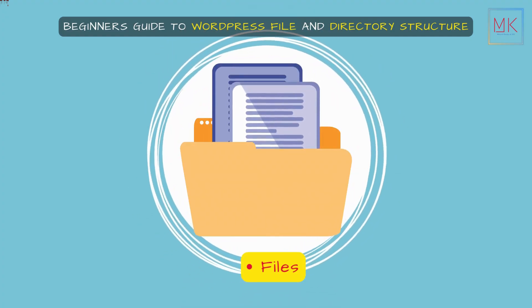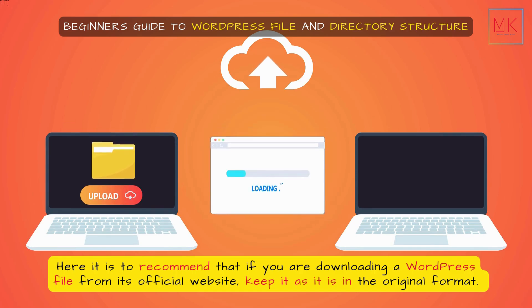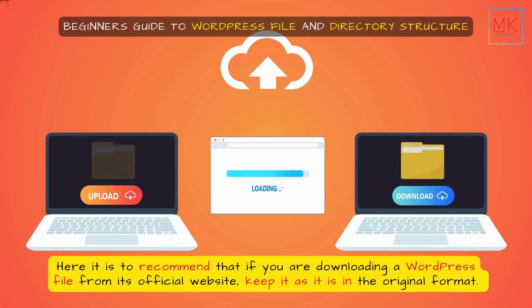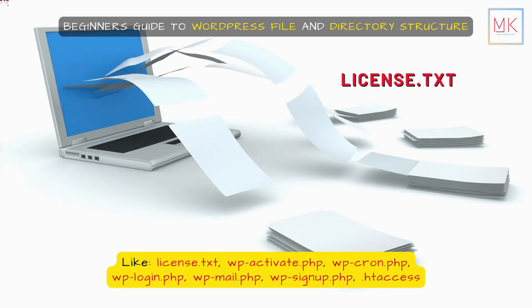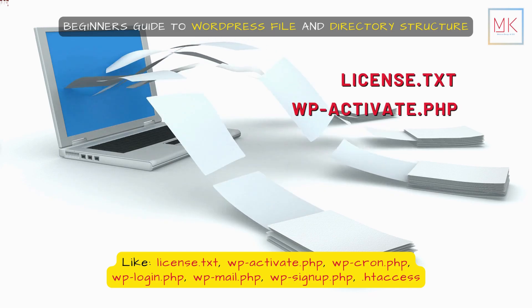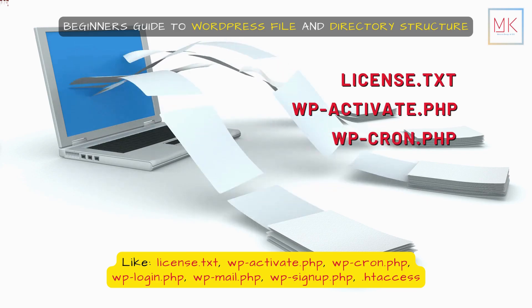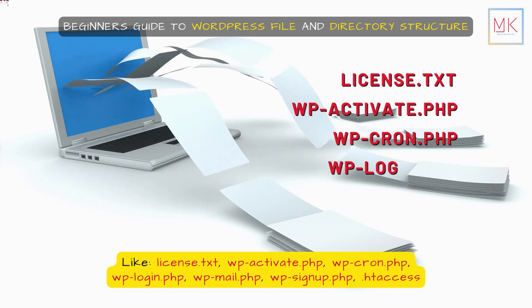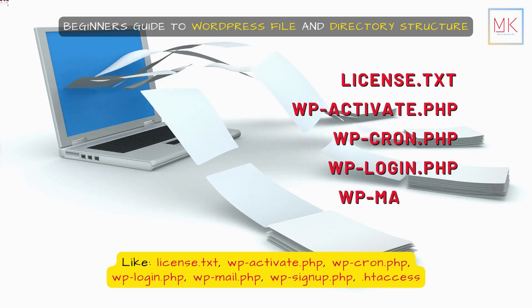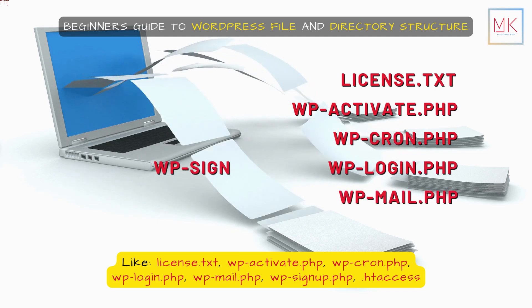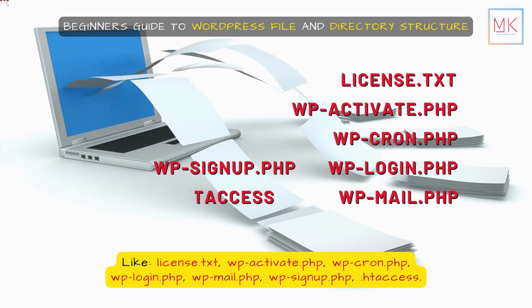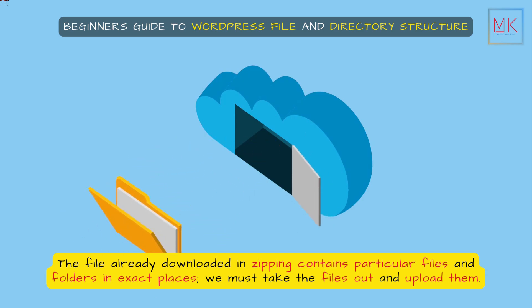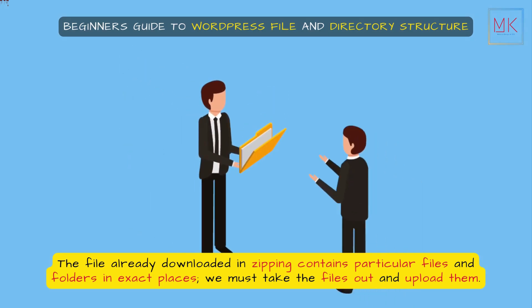Files. It is recommended that if you are downloading a WordPress file from its official website, keep it in the original format. The downloaded zip file contains particular files and folders in exact places, including License.txt, WpActivate.php, WpCron.php, WpLogin.php, WpMail.php, WpSignUp.php, and .htaccess. We must take the files out and upload them.